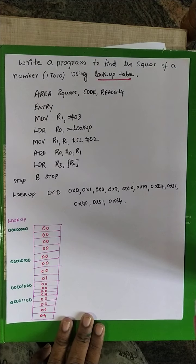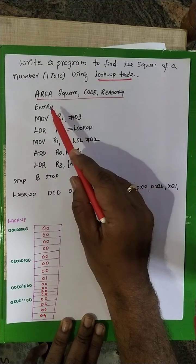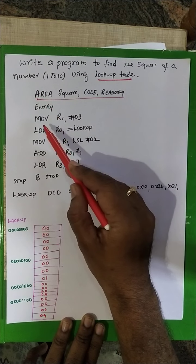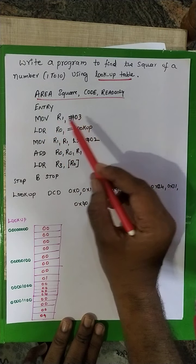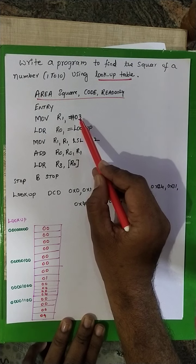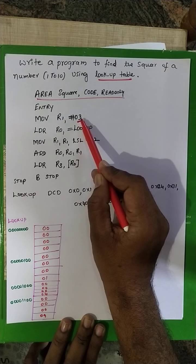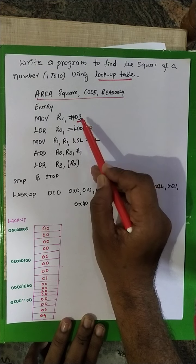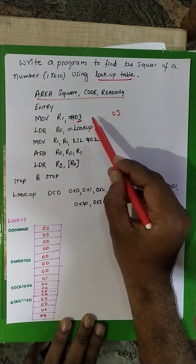As usual, you write the entry of the program. The program will start execution from here. The instruction is: move R1, comma 3 — so the value 3 is loaded. The given number is 3, and you have to find out the square of 3.